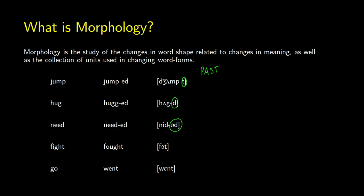Sometimes you have words that don't add 'ed', but you get some change inside. For instance, fight to fought — what's being changed there is the vowel in the middle, from 'I' to 'aw'. Sometimes we have something called suppletion, where the word changes to a completely different form, as in go to went. There's nothing about 'go' that you can add to or change in a minor way to make 'went' — we have a totally different word.